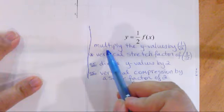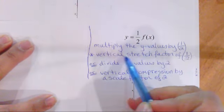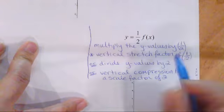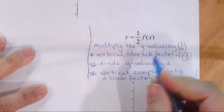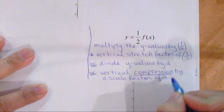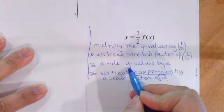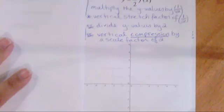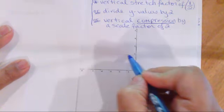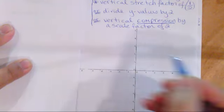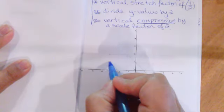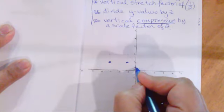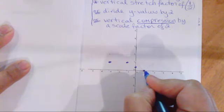For y equals one half f of x, we're going to multiply all the y values by a half — it's a vertical stretch factor of a half. You could also say that's a vertical compression by a scale factor of two. You could multiply every y value by a half or divide every y value by two. Taking the points from before and dividing by two: y equals 2 becomes y equals 1, y equals 1 becomes y equals a half, y equals 0 stays the same, and y equals 1 becomes a half.